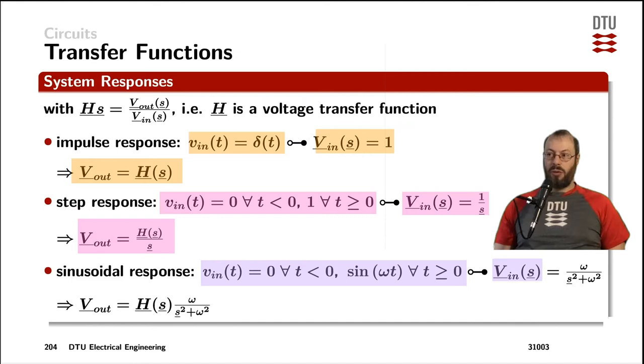That transfers into the fraction omega divided by s squared plus omega squared in the Laplace domain, and we simply multiply that to the transfer function to get the output voltage of a system.